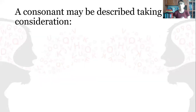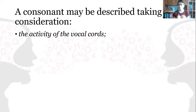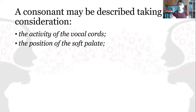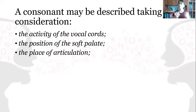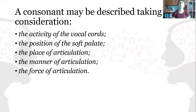We can describe a consonant sound taking into consideration: the activity of the vocal cords — giving us voiced or unvoiced sounds; the position of the soft palate — giving us nasal consonant sounds; the place of articulation; the manner of articulation; and the force of articulation.